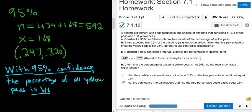Now, it did say percentage in the question, so I'm going to turn these into percentages: 24.7% and 32%. So that would be a correct interpretation for the confidence interval.